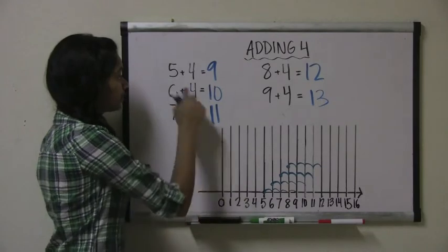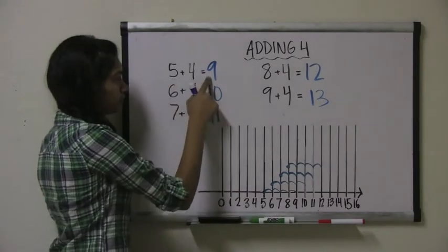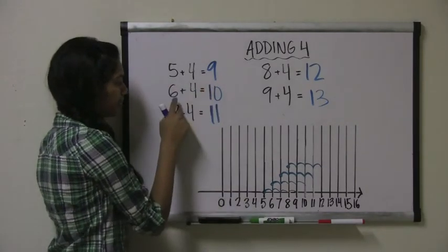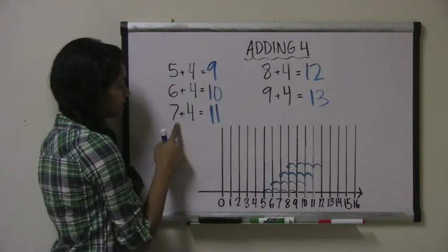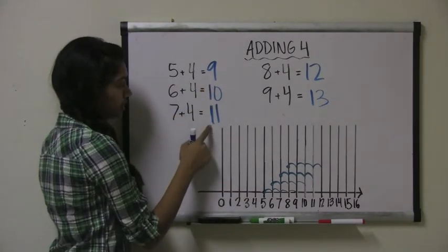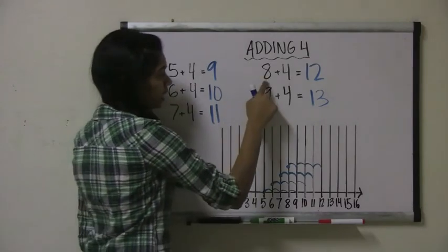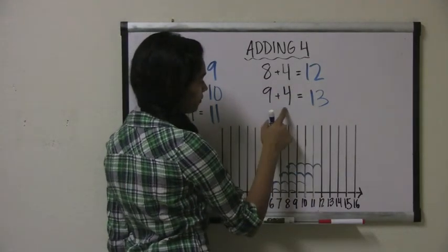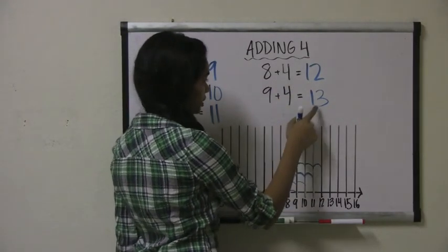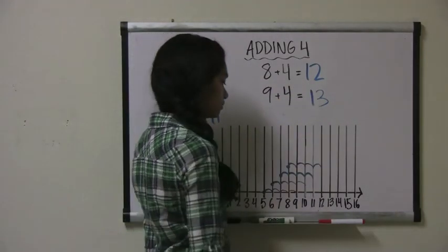So in review: 5 plus 4 equals 9, 6 plus 4 equals 10, 7 plus 4 equals 11, 8 plus 4 equals 12, and 9 plus 4 equals 13, which comes after 12.